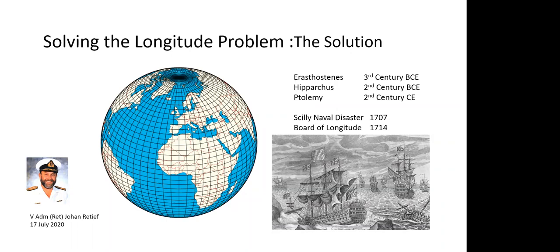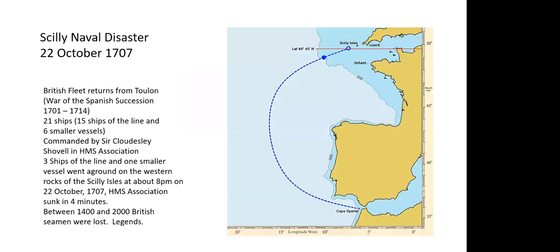On the picture at the bottom right, you see a number of British ships on the rocks — a terrible place to be. The disaster took place on 20 October 1707. The British fleet returning from Toulon during the War of the Spanish Succession, 1701–1714: 21 ships — 15 ships of the line and six smaller vessels — sailed from Toulon back to England. Commanded by Admiral of the Fleet Sir Clowdisley Shovell, with his flagship HMS Association, three ships of the line and one smaller vessel went aground on the Western Rocks of the Scilly Isles at about 8 p.m. HMS Association sank in four minutes.